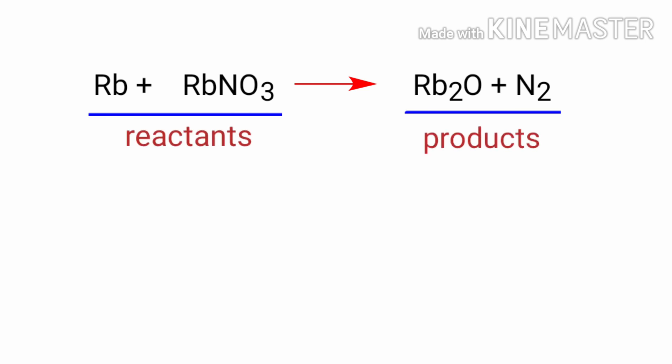In this equation, the reactants are rubidium and rubidium nitrate, and the products are rubidium oxide and nitrogen. If you look at this equation, the equation is not balanced.